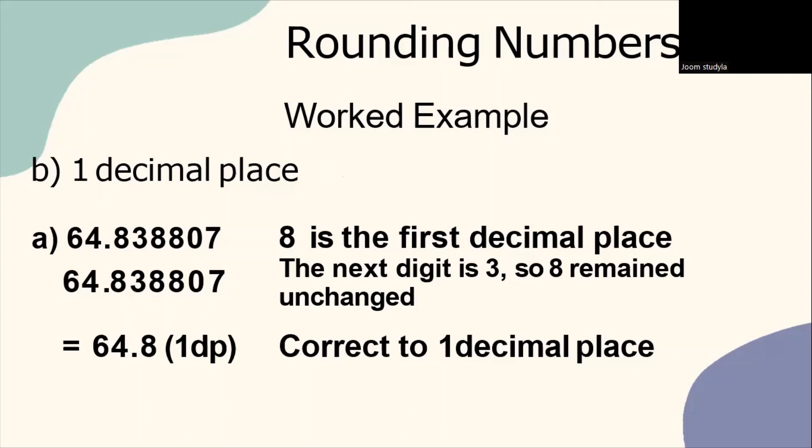We have the next question whereby, here you will be asked to round the number to one decimal place. We have the digit here, 64.838807.